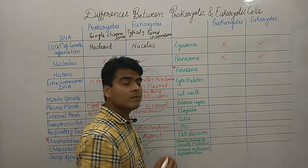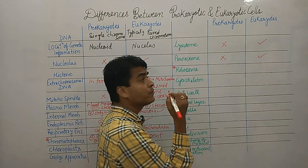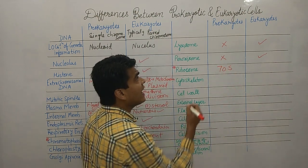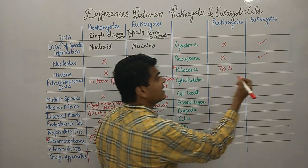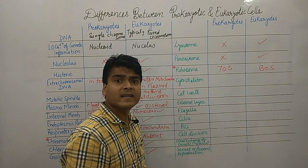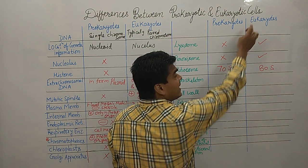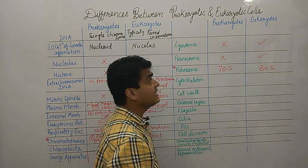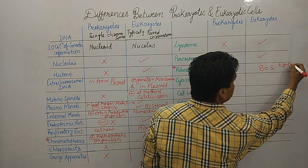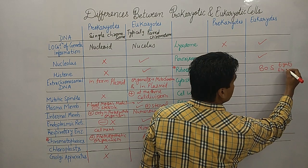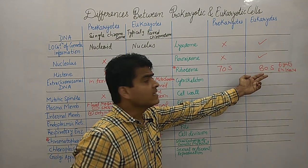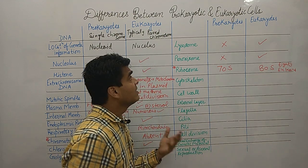Ribosomes are present in both cell types, but in prokaryotes they are 70S type while in eukaryotes they are 80S type. A memory trick: 'E' for eukaryote matches '80' — both start with a similar sound — so you can remember eukaryote has 80S ribosomes.